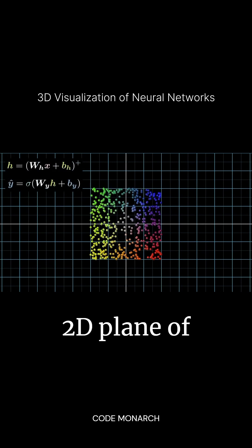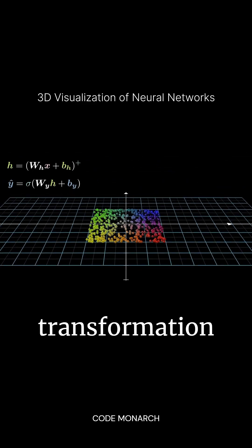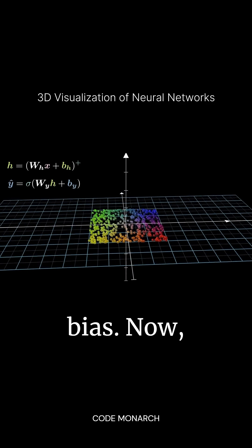We start with a 2D plane of uniformly distributed points and aim to map this from 2D to 3D. Here's how it works: we rotate the data into 3D space and apply a linear transformation using a weight matrix and bias.